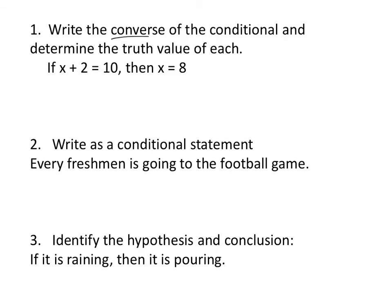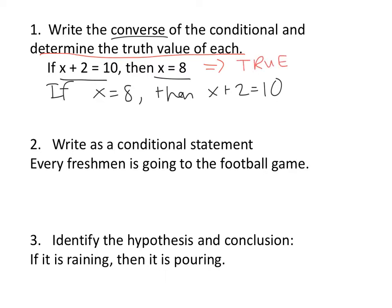When writing the converse, you need to change the hypothesis and conclusion. So I'm going to write if x equals 8, then x plus 2 equals 10. Then it wanted to determine the truth value of each. The first one, if x plus 2 equals 10, then x equals 8, is true. The converse, if x equals 8, then 8 plus 2 equals 10, is also true. So both of them are true, which means I could actually write it as a biconditional.